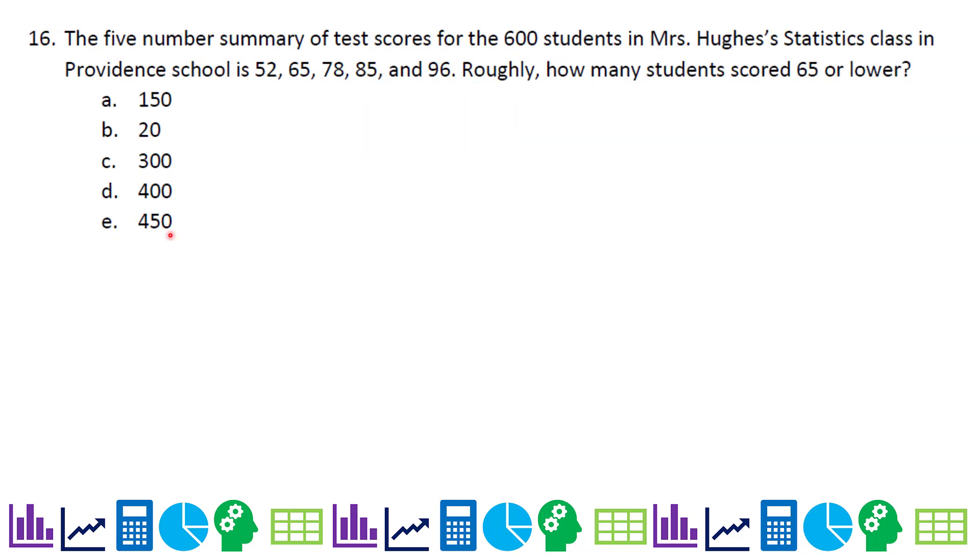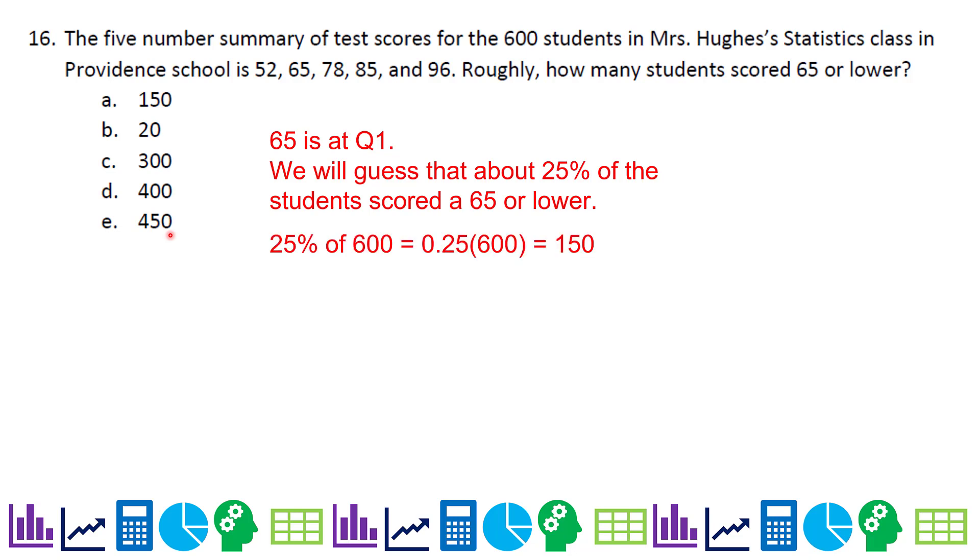The five-number summary of test scores for the 600 students in Mrs. Hughes statistics class in Providence School is 52, 65, 78, 85, and 96. Roughly, how many students scored 65 or lower? We know 65 is Q1. We're going to guess about 25% of the students scored 65 or lower. And 25% of 600 is basically 0.25 times 600 or 150. So that's roughly. The reason we don't know if it's exactly, we could have a couple of 65s between Q1 and the median. We know that our median is at 78, but we don't know how high up the 65 goes. So that's why it's roughly.